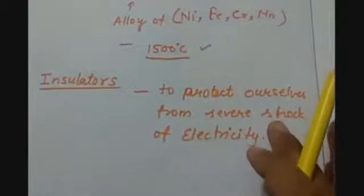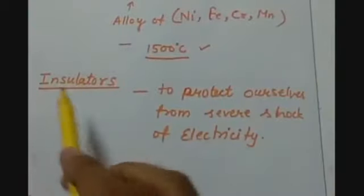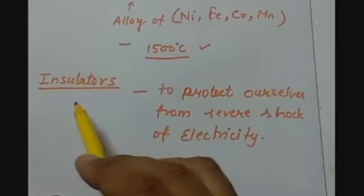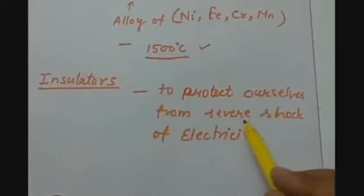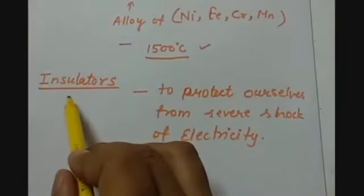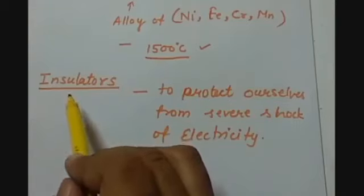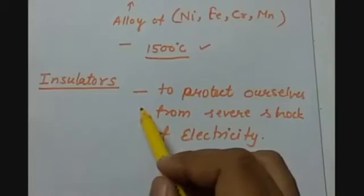We have talked about metals and alloys, but the insulators, which have a very high resistivity, are also used to protect ourselves from severe electric shock — as they do not conduct electricity, they can be used to protect us from electric shock.